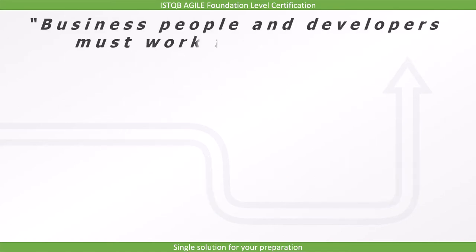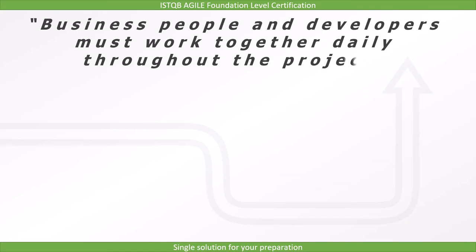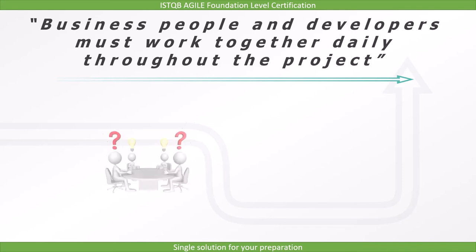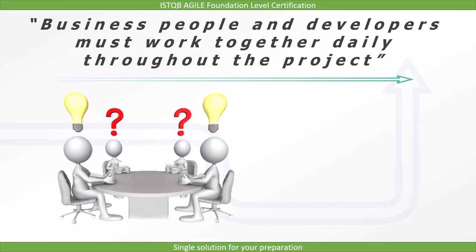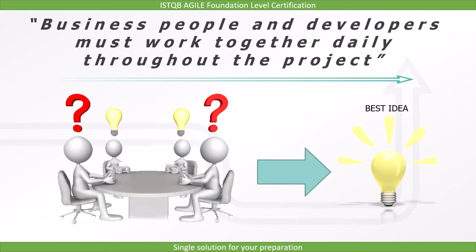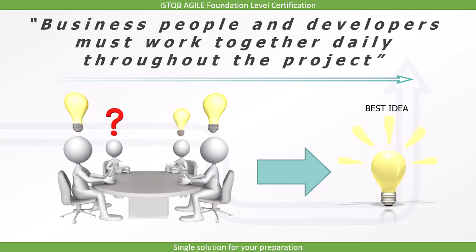The fourth principle is: business people and developers must work together daily throughout the project. When working on a development project, we can succeed only if we work as a team. For example, if we want to implement an algorithm and conduct a brainstorming session, we get input from different people and can decide which is the best approach. Therefore, business people and developers must work together daily throughout the project.